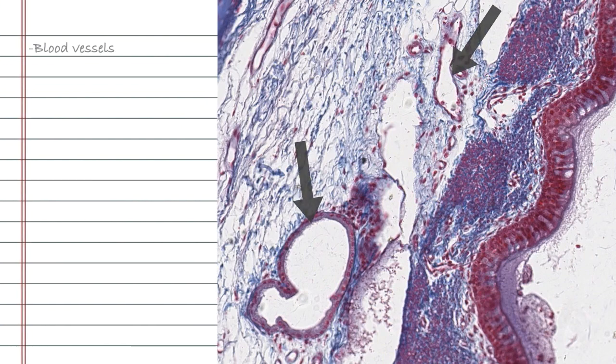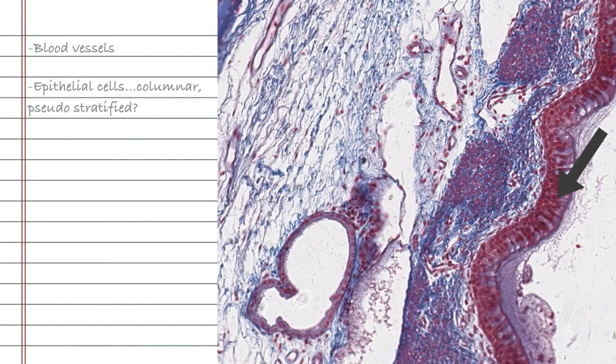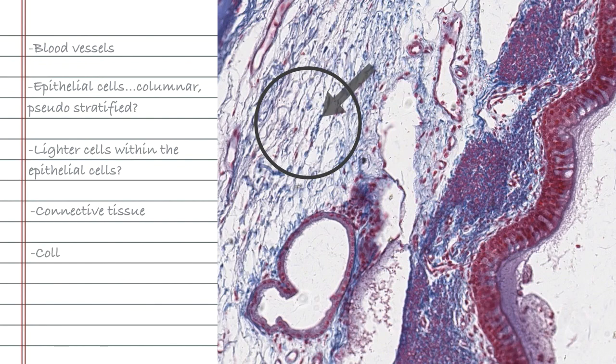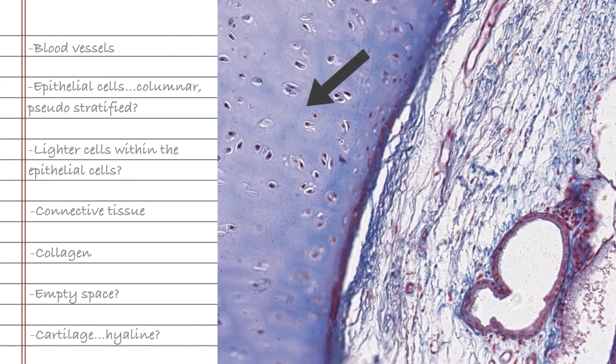We can see blood vessels here, epithelial cells that appear to be pseudostratified columnar cells, lighter cells within that layer, connective tissue in this area containing collagen fibres which is stained blue, some empty space where there is no tissue and hyaline cartilage if we move the slide.